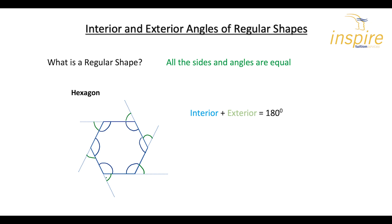So that explains exterior and interior angles. How do we know they add up to 180 degrees? If you notice, we have a straight line across here, and these two angles, when added together, give you a semicircle. So therefore, you can say that an interior plus an exterior angle will always be 180 degrees.